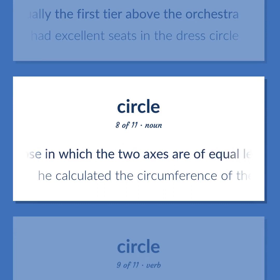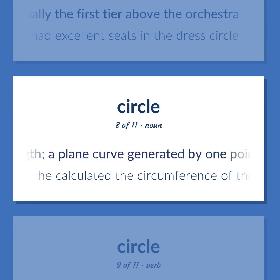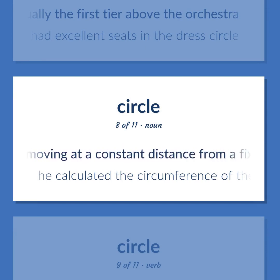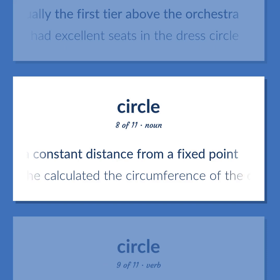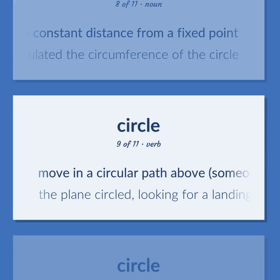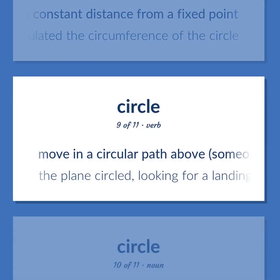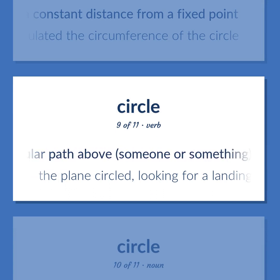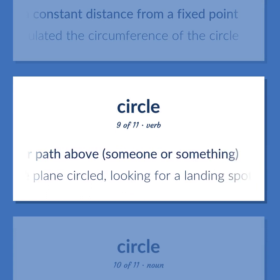An ellipse in which the two axes are of equal length; a plane curve generated by one point moving at a constant distance from a fixed point. Example: He calculated the circumference of the circle. To move in a circular path above someone or something. Example: The plane circled looking for a landing spot.